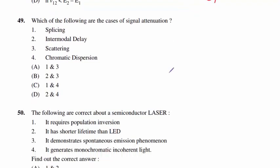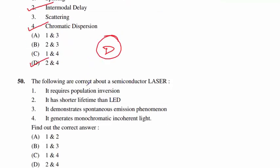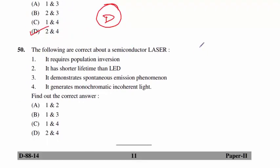Question 49: which are causes of signal attenuation? Statement 1 — splicing; Statement 2 — intermodal delay; Statement 3 — scattering; Statement 4 — chromatic dispersion. The major causes of signal attenuation are intermodal delay and chromatic dispersion. Option D is correct.